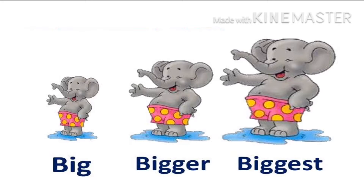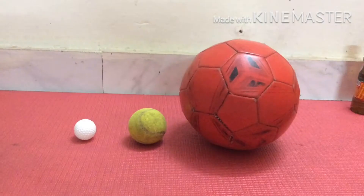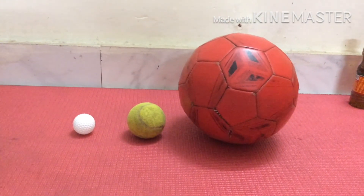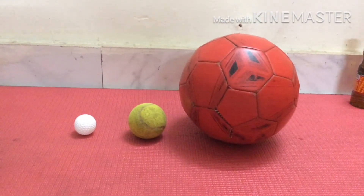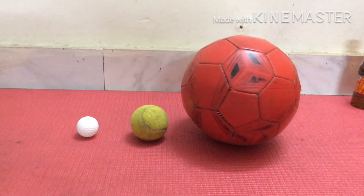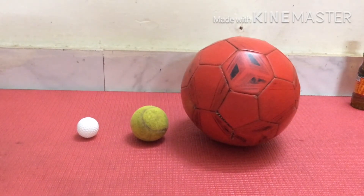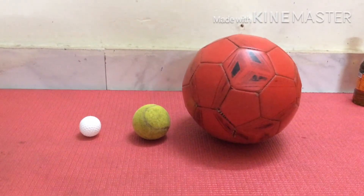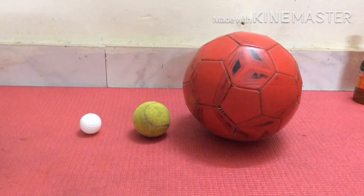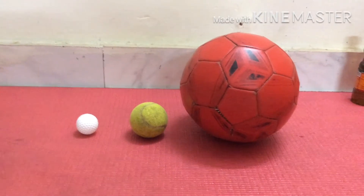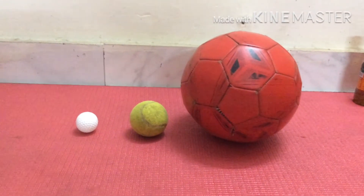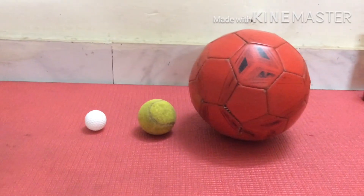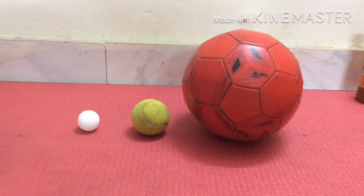Now let's see a video. As you can see, in front of you on the mat I have placed three different balls. The white ball is big, the green tennis ball is bigger, and the red football is the biggest. So this will help you to compare the sizes of big, bigger and biggest.